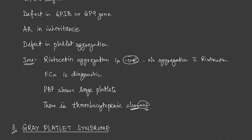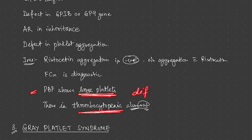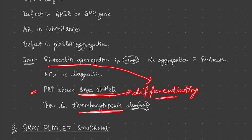In Bernard-Soulier syndrome, even ristocetin aggregation is negative — no effect of ristocetin — and platelet aggregation is defective with all other aggregating agents as well. Flow cytometry is diagnostic. The PBF will show large platelets and there is thrombocytopenia. These three features — negative ristocetin, large platelets, and thrombocytopenia — are the differentiating factors from Glanzmann's thrombasthenia.